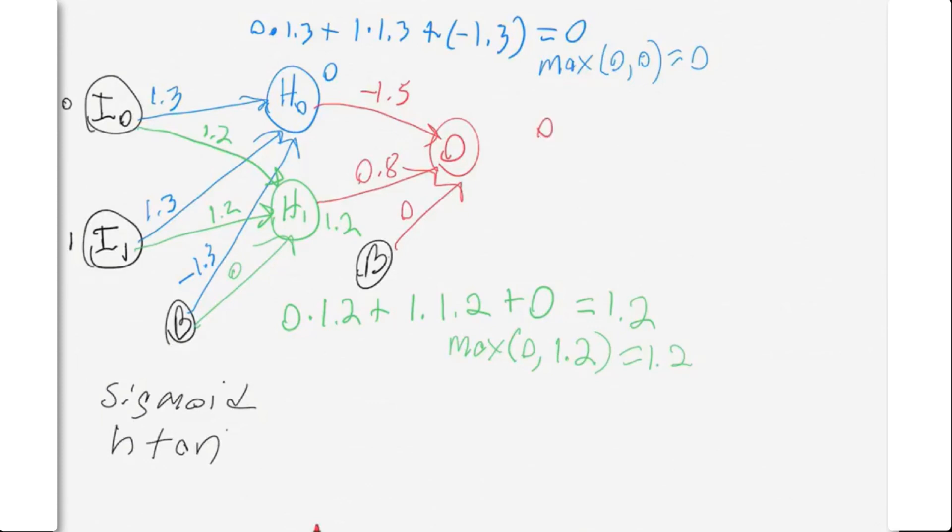This results in the final equation that ties this whole thing together. That is going to be the output from hidden 0 times 1.6 plus 1.2 times 0.8. You can see the 1.2 times the 0.8. Then plus the bias or the intercept, which is 0. This whole thing equals 0.96.